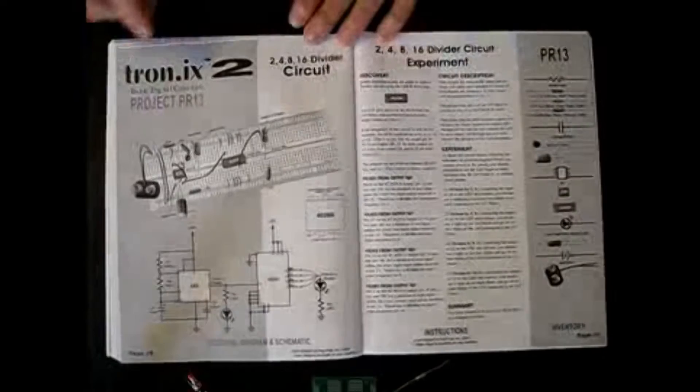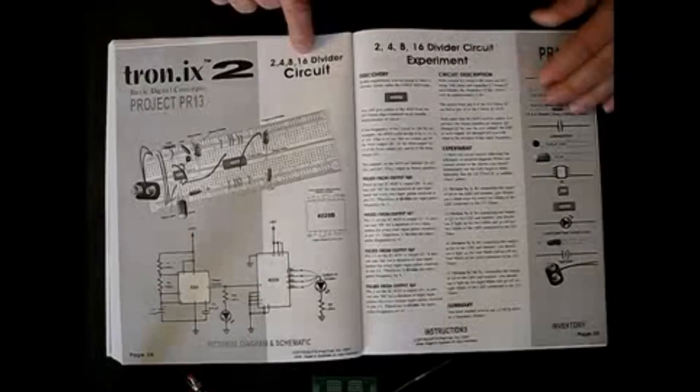The next experiment that we go into here is a divider circuit. Divide by 2, divide by 4, divide by 8, divide by 16, and we explain all about how that works.